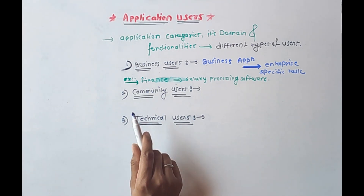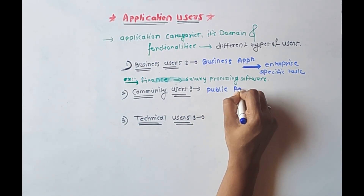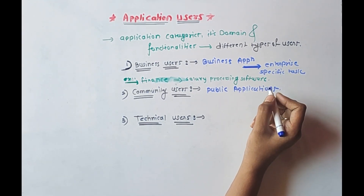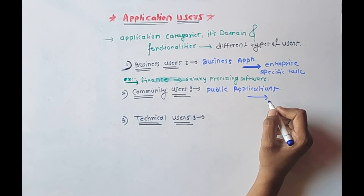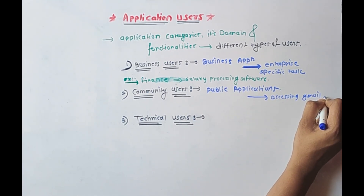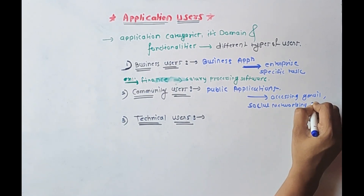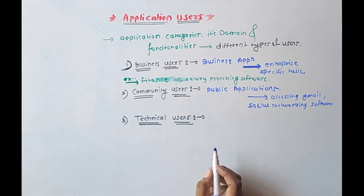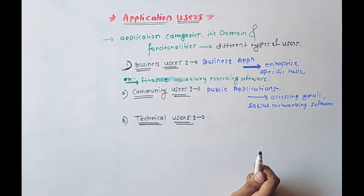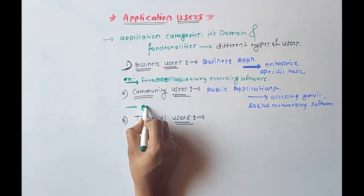The second type is community users. Community users use public applications for individual or group needs, like accessing emails — for example Gmail — or social networking software. Gmail is considered the best example here.